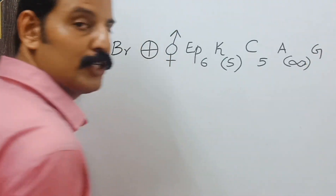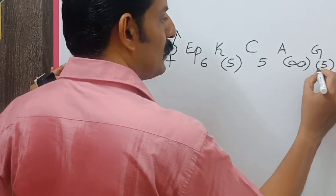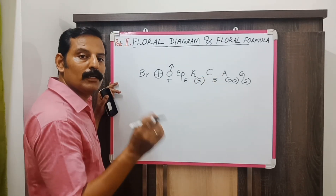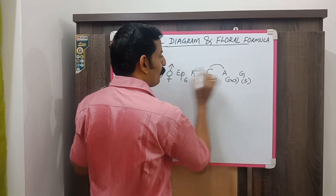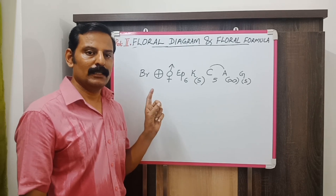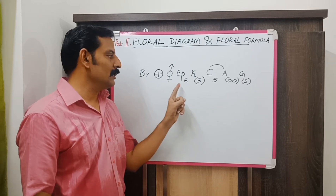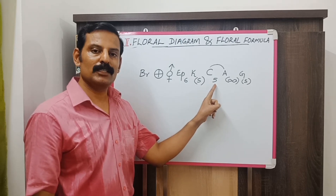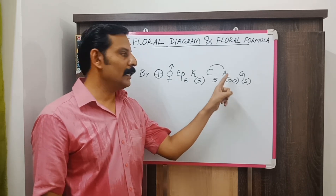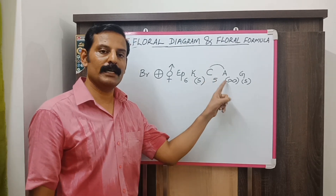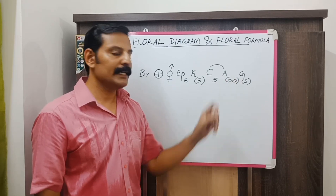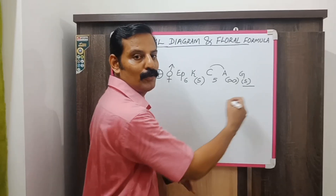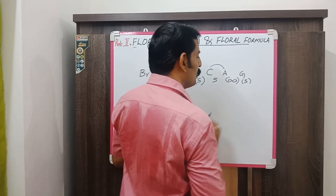Then the last thing is the gynoecium. Gynoecium is 5 in number and it is also united. Now you have to represent the adhesion between floral whorls — the base of the corolla and the base of the staminal tube are slightly united, so you represent that with a connecting line. By looking at this floral formula, you can understand: it is a bracteate, actinomorphic, bisexual flower; it is having 6 epicalyx, 5 united sepals, 5 petals, numerous united androecium with corolla-androecium adhesion, gynoecium of 5, and the position of the ovary is hypogynous — so you draw a line just below the number.